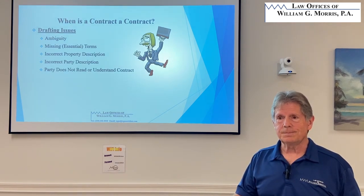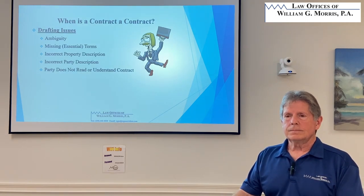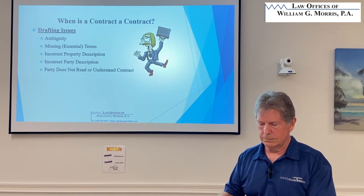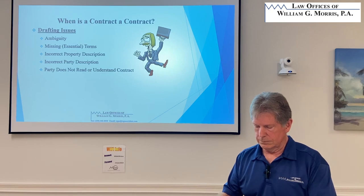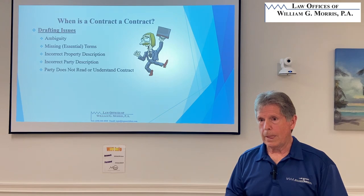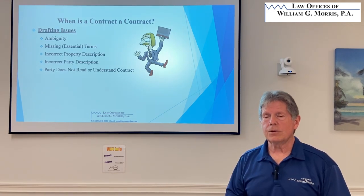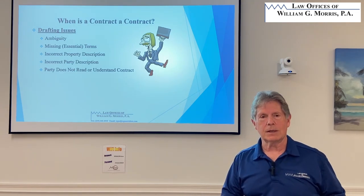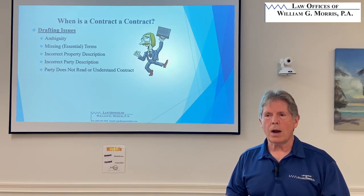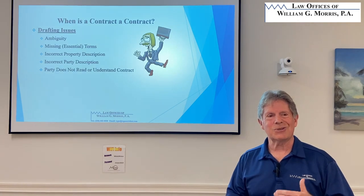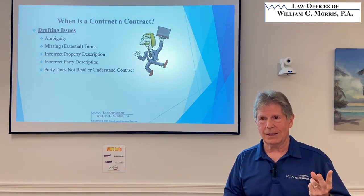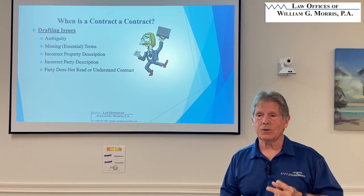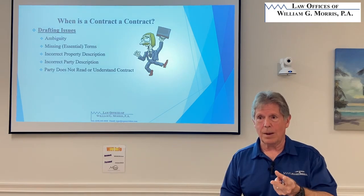If a husband and wife want to buy a condo and the husband writes the contract in his name alone but they both want to be on the deed, that creates extra issues. The lender is going to require the mortgage to be executed by both spouses. As soon as a lender finds out there will be two people on title, most will want to qualify that second buyer to make sure their credit is sufficient. That's where the problem comes in.